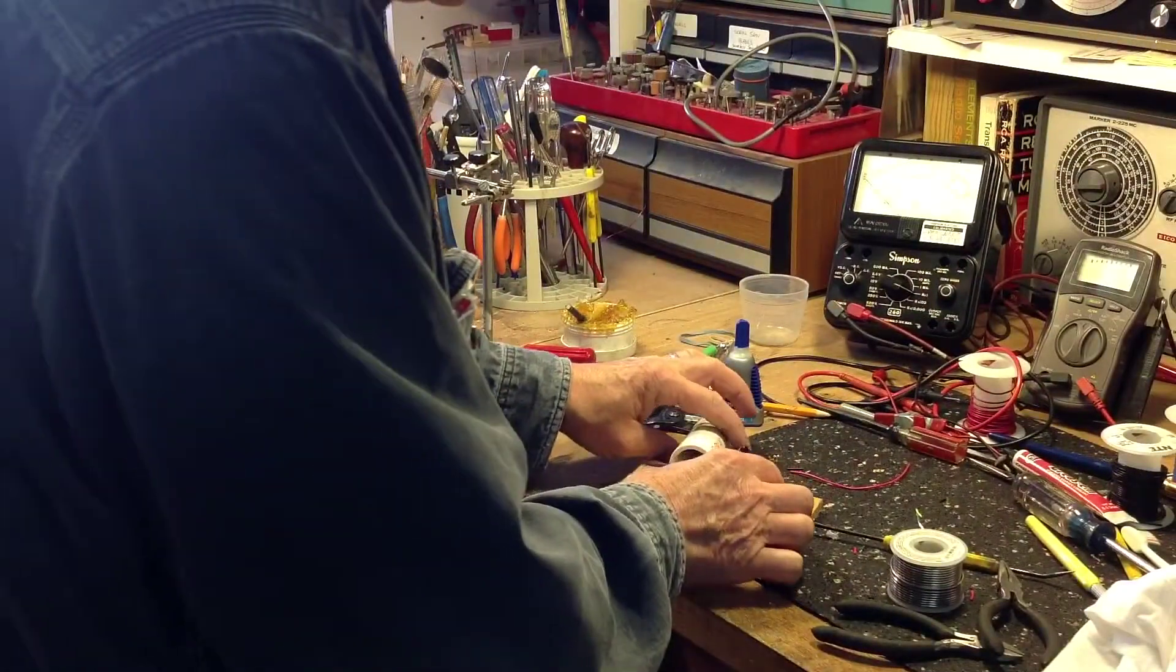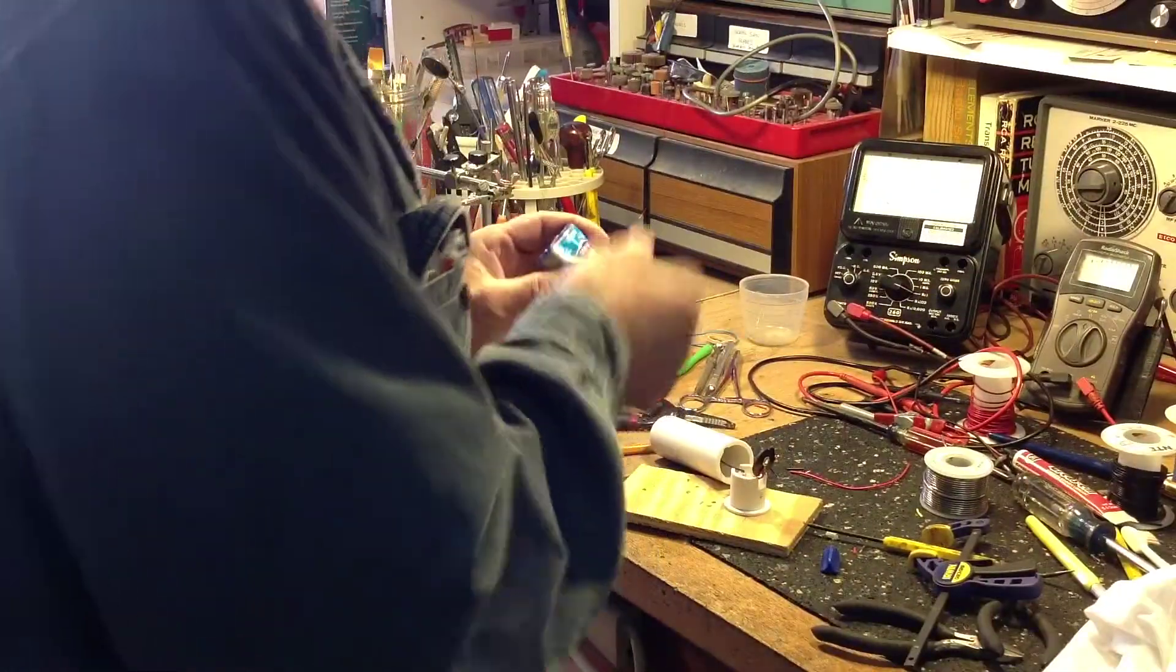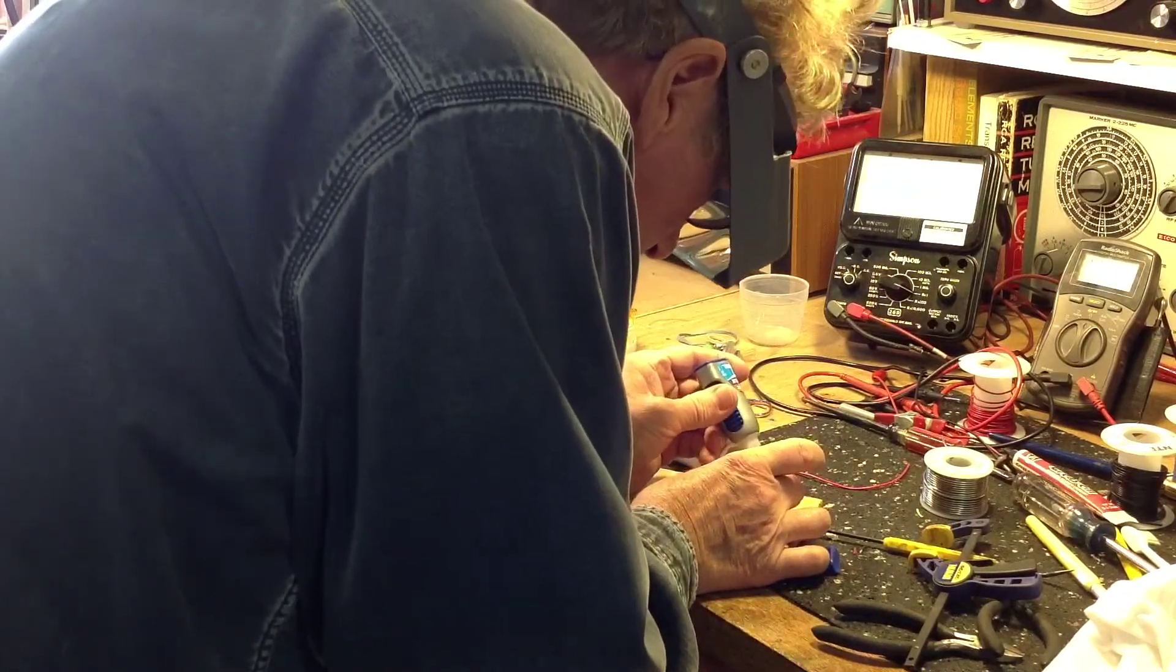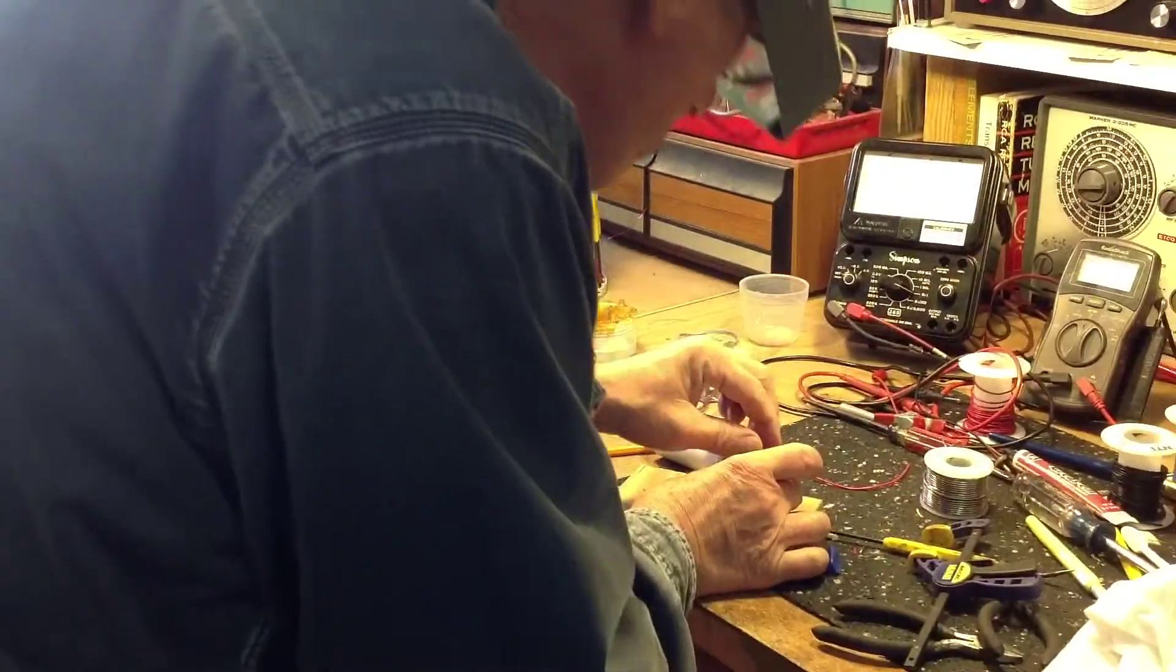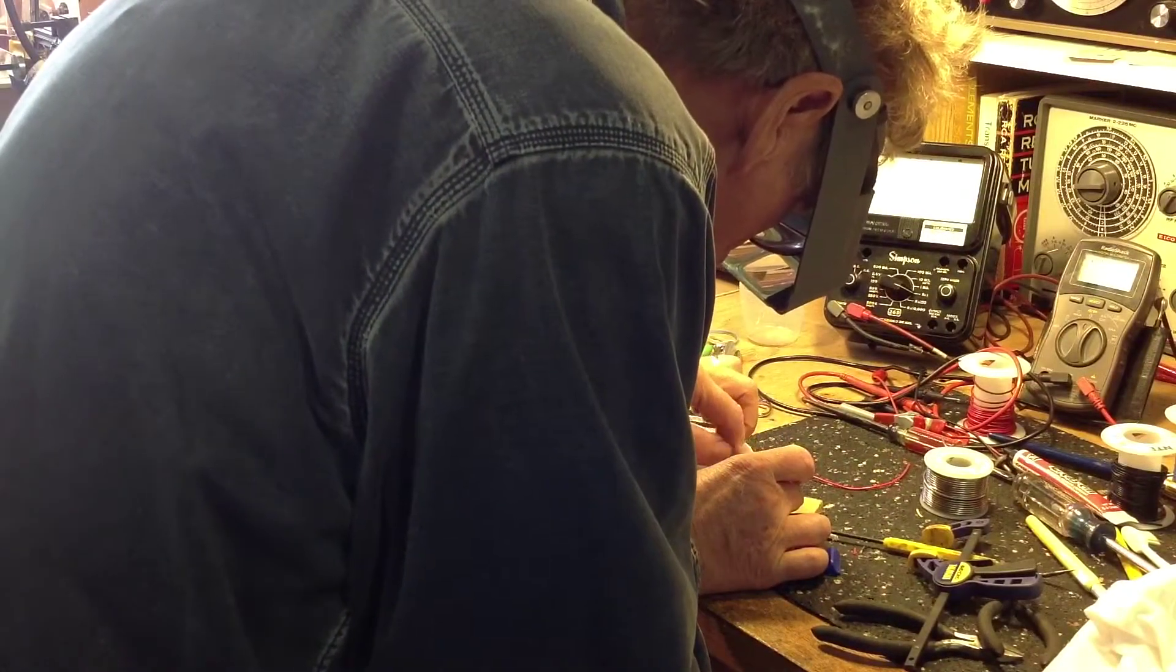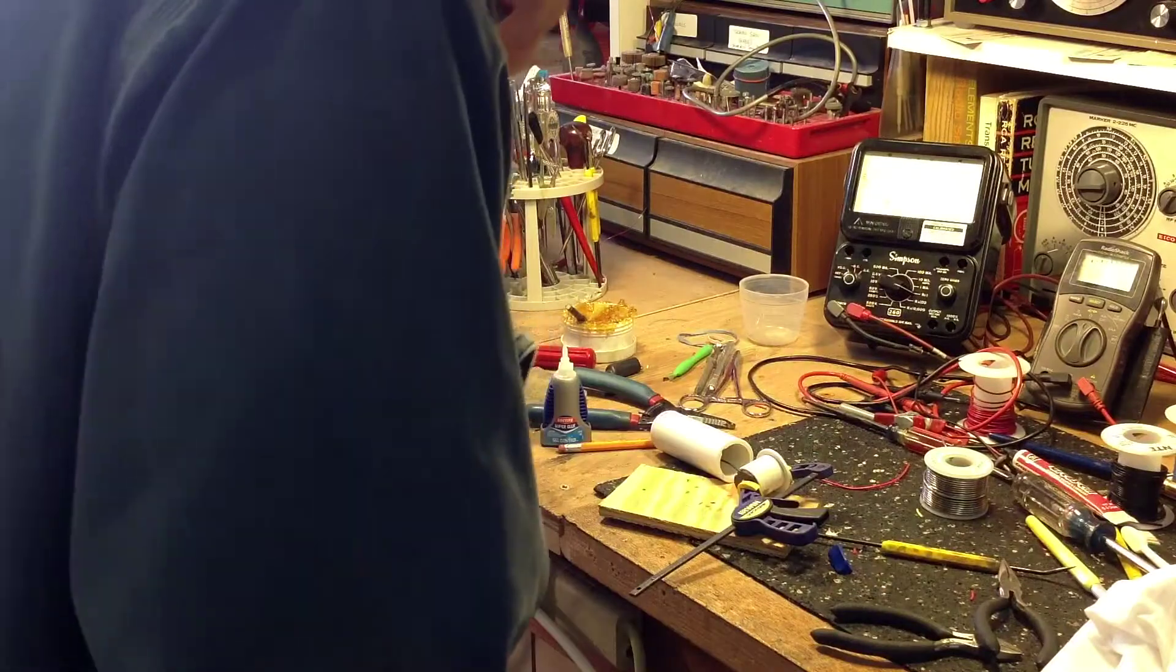Okay, our battery contacts are soldered into place. So now I can glue the positive contact down onto the end piece. I'll use super glue for that. Okay, I'll just hold it in place there for a few seconds, and then I'll put a clamp on it and we'll set it aside to dry.